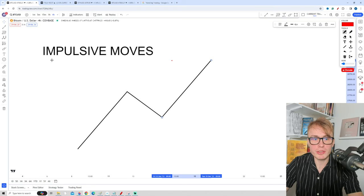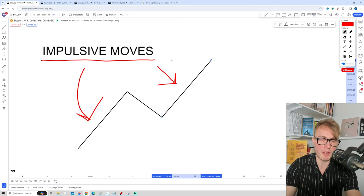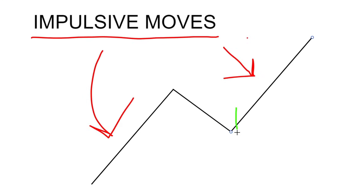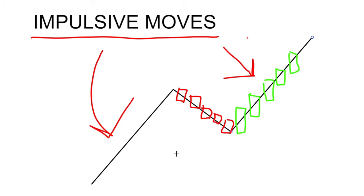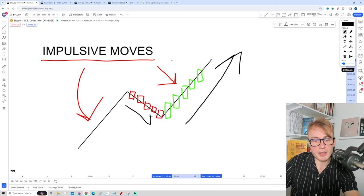Now let's dive a little bit deeper into impulsive moves, because we need to understand how do we know that we have an impulsive move versus a pullback. Impulsive moves can be identified by only looking at the price. One thing to look out for is that the candles within the impulsive move should preferably be pretty large. What we especially want to see is that the candles during the impulsive move are larger and show more momentum compared to the candles in the pullback — or in very simple terms, the price should increase more sharply compared to the pullback.